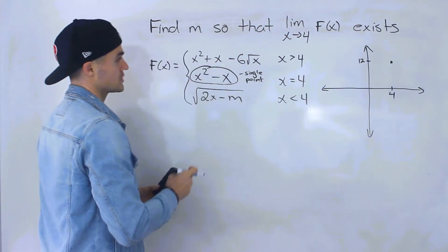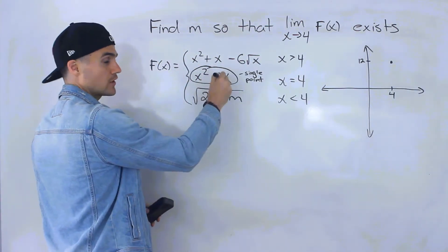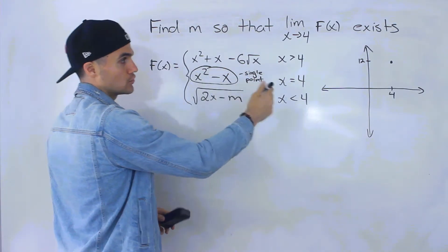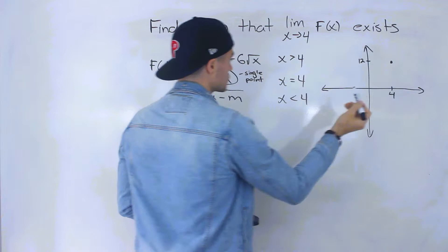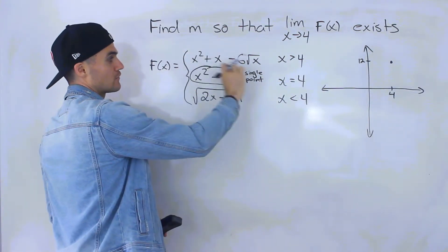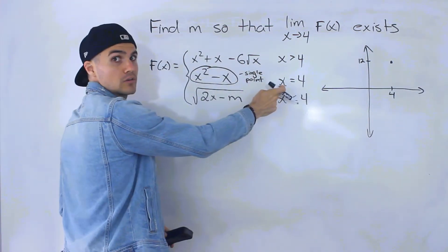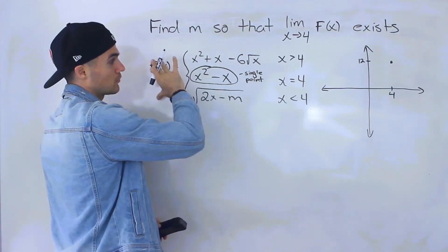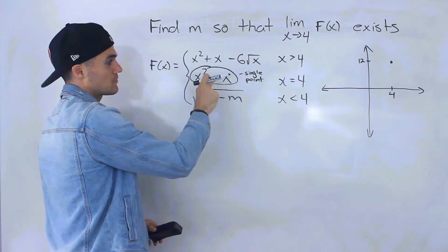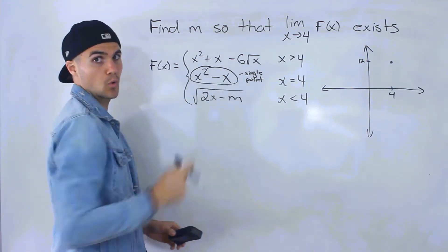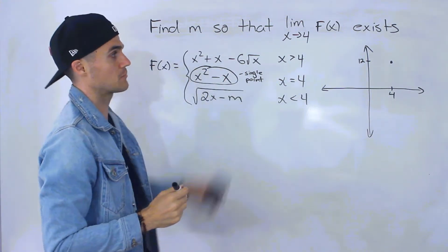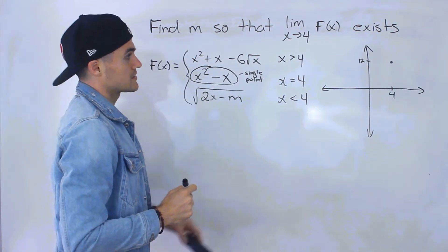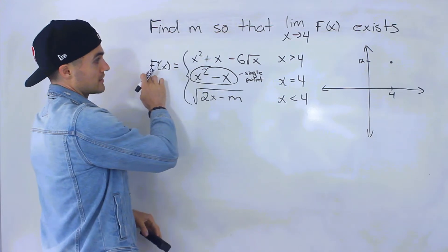Sometimes a piecewise function will just have the y value — like 12 — directly listed for that piece, rather than a whole function, since it only applies to one point. So just be aware of that. Either way, we know that that point exists for f of x.